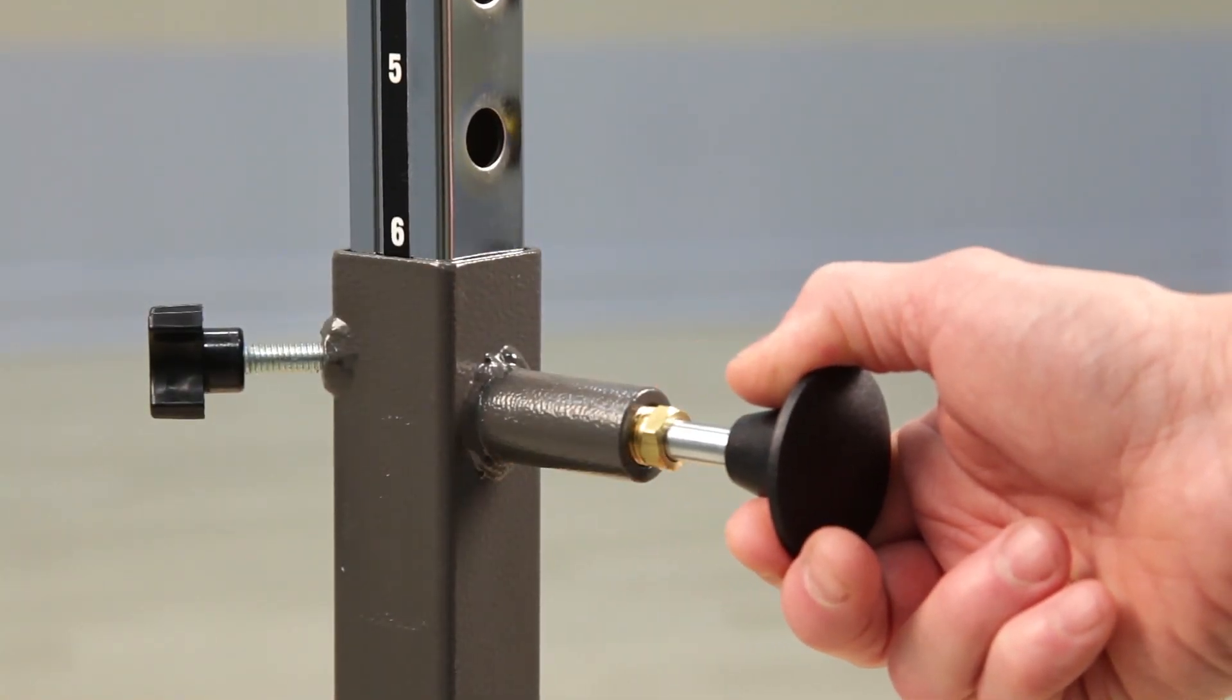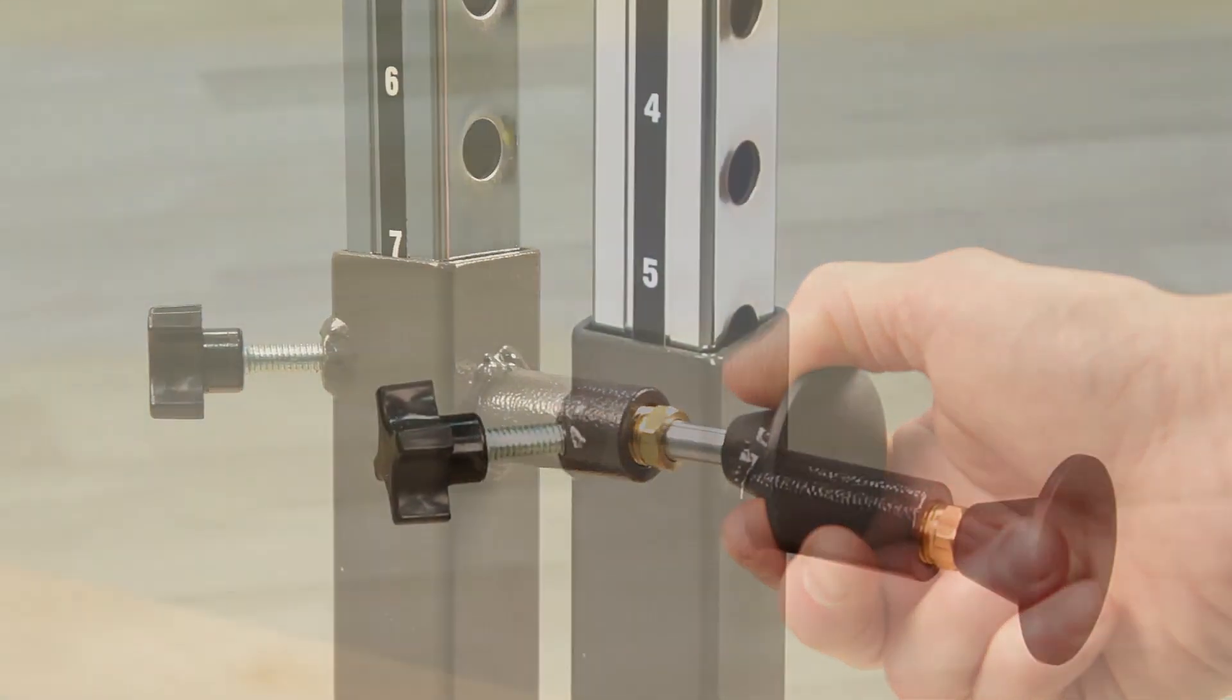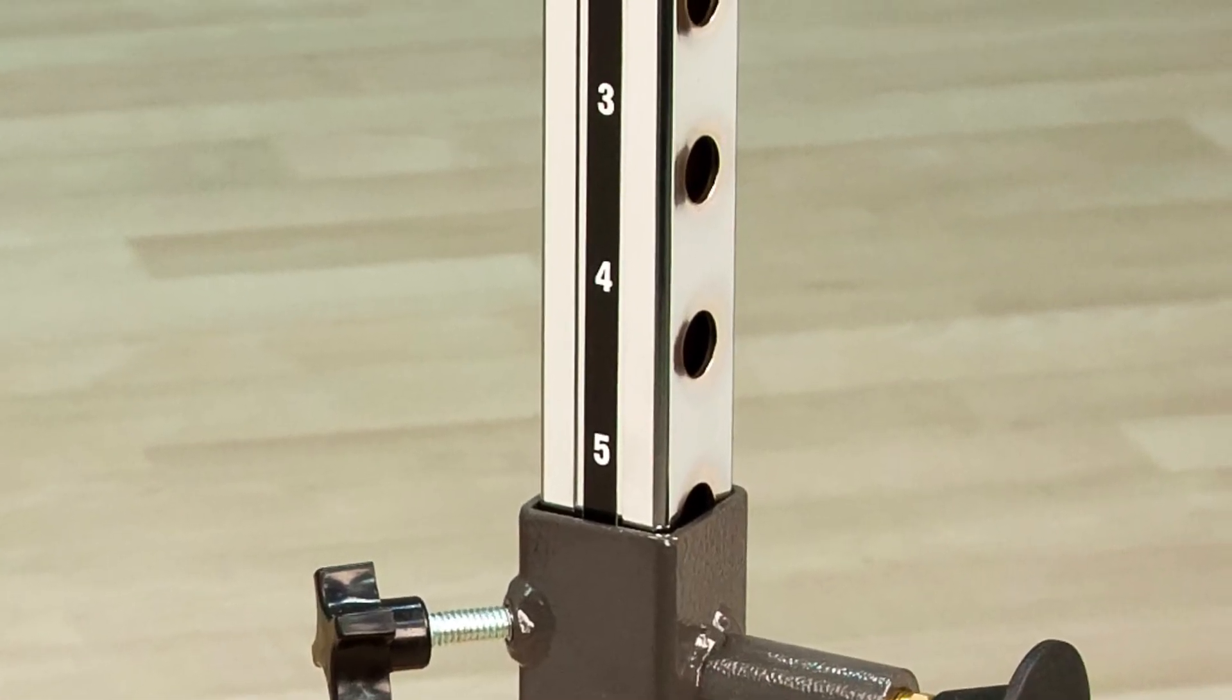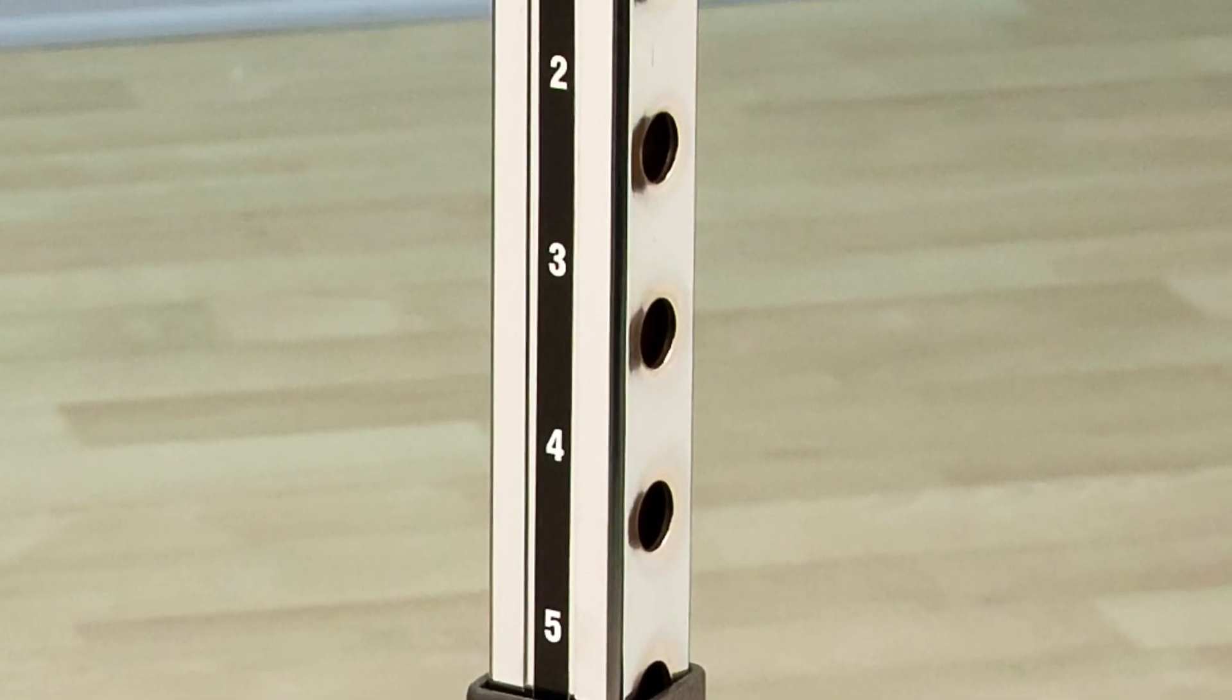Adjust the height of the handrails with the spring loaded plungers which are clearly numbered so both ends and both bars can be set to any height quickly and easily.